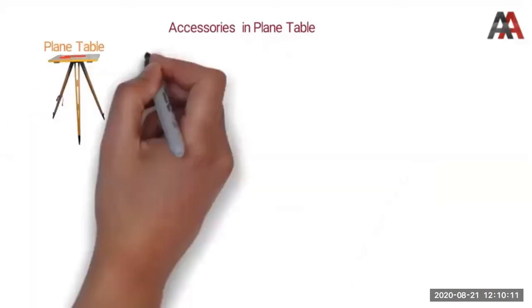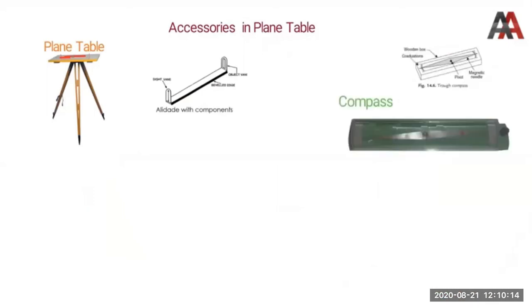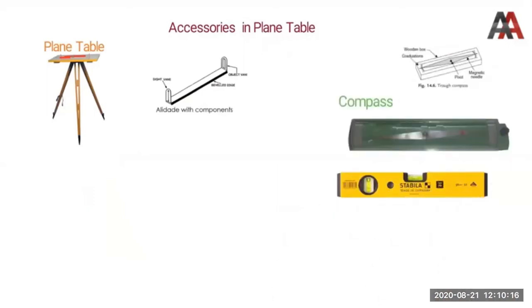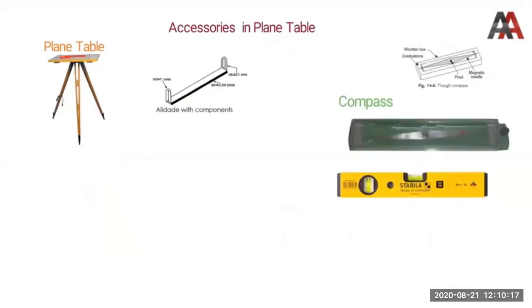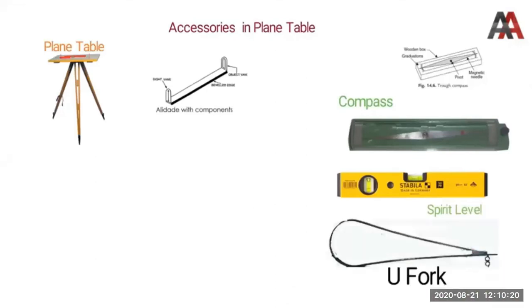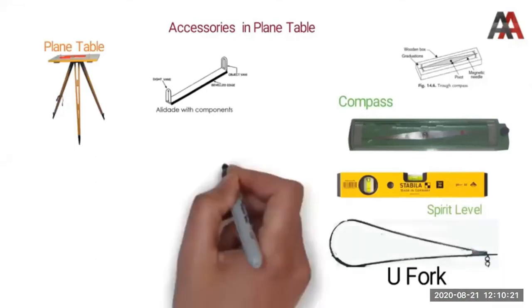The instruments used in plane table surveying are: the plane table itself, alidade, compass, spirit level, U-fork, and plumb bob.